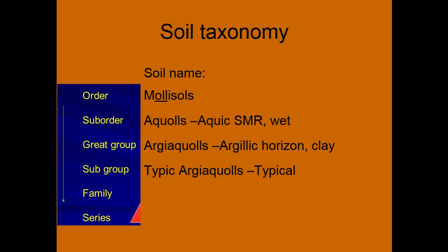Just as an example, we'll walk through this. So we have a Mollisol — that's our soil order. We take the 'oll' from that and then go to our suborder. Our Mollisol has an aquic soil moisture regime, which is just a measure of how much water it gets during the growing season. So we take 'aqu' and add it to 'oll', so then we have an Aquoll. And then we have an argillic horizon in our Aquoll — argillic being a clay deposit.